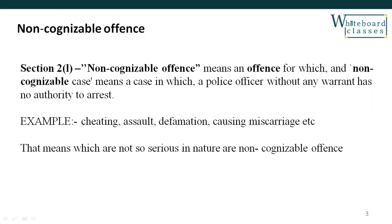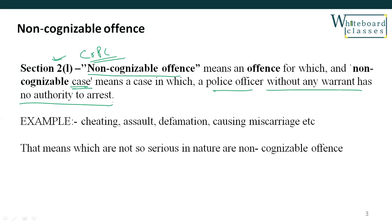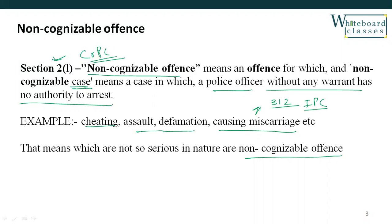Next, Non-Cognizable Offences. Section 2L of CRPC defines Non-Cognizable Offences and Non-Cognizable Cases as those where the police officer cannot arrest without warrant — meaning the police have no authority to arrest without warrant. For example, if there is information about a non-cognizable offence such as cheating, defamation, assault, or causing miscarriage (Section 312 IPC), the police have no power to arrest without warrant.